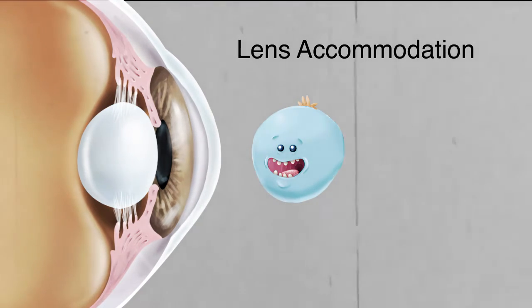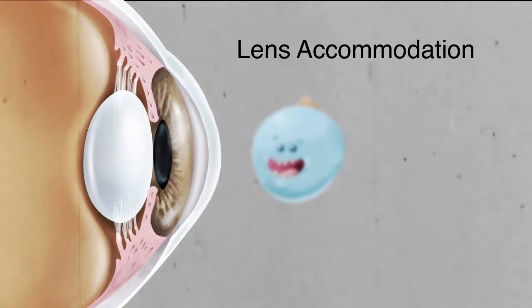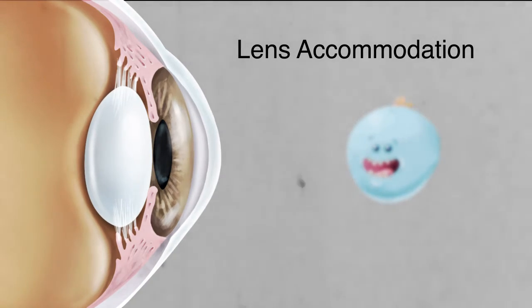Without accommodation, our friend over here would appear blurry. As you get older, that lens becomes less elastic and unable to accommodate properly. This condition is called presbyopia.